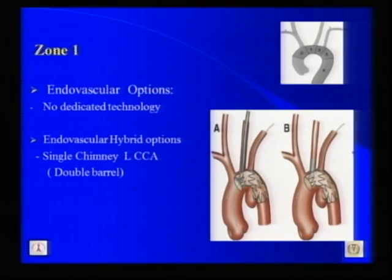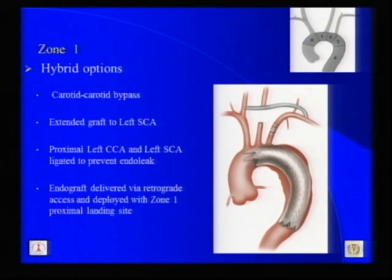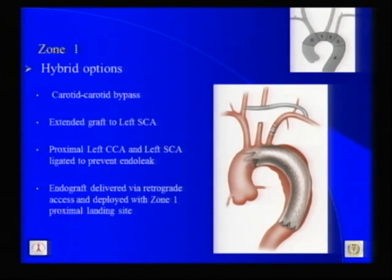Regarding Zone 1, there is again no dedicated technology available commercially in the United States. The endovascular hybrid options involve exposure of the left common carotid artery in a retrograde fashion, delivering a single chimney or periscope in the left common carotid, and then deploying the TEVAR — also called the double barrel technique in the European literature. The open option is a carotid-to-carotid bypass graft, with the right carotid as donor vessel extended to the left subclavian artery, ligation of both the proximal common carotid and left subclavian to prevent endoleak, and then the endograft delivered retrograde protecting the origin of the innominate artery in Zone 1.